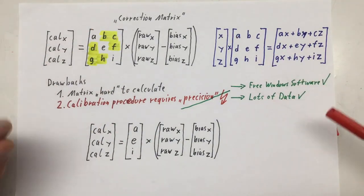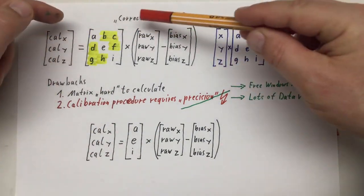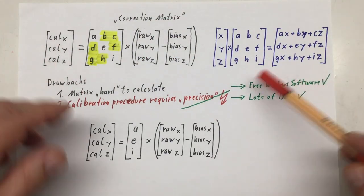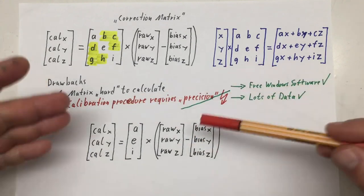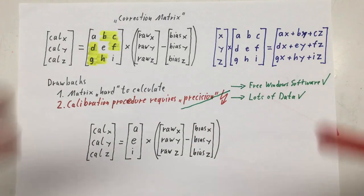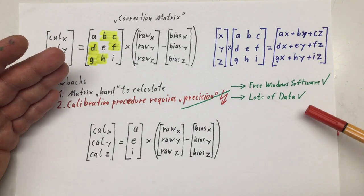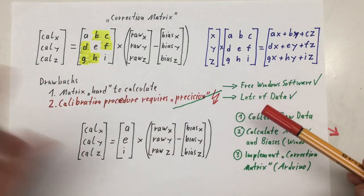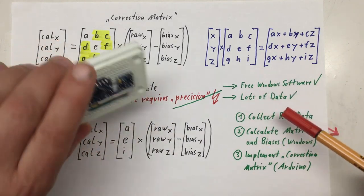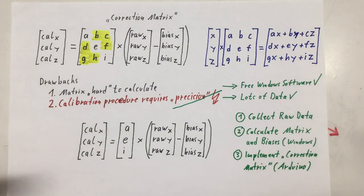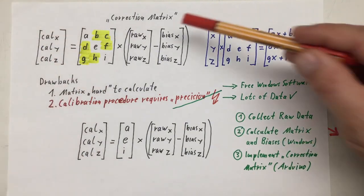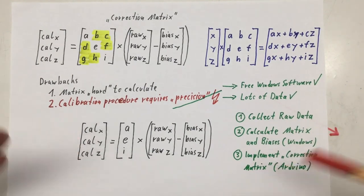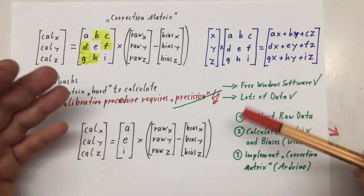In the previous video I dismissed the correction matrix method because the correction matrix is hard to calculate, and the calibration procedure itself requires precision. Meanwhile I found a free Windows software for calculating that correction matrix, and the best thing is it doesn't require precision measurements, it just requires that you take lots of measurements.